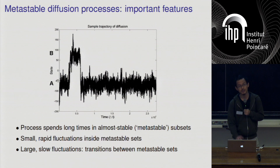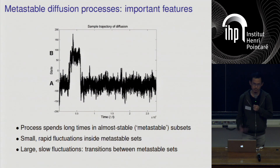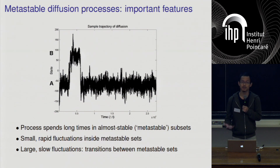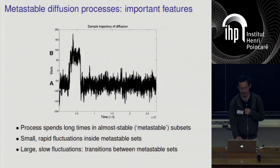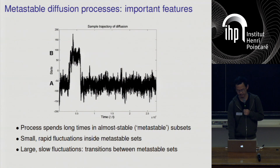We also have large slow fluctuations. By slow, I mean we have to wait a long time to observe such a transition or fluctuation — for example, a transition from A to B, or from B to A.